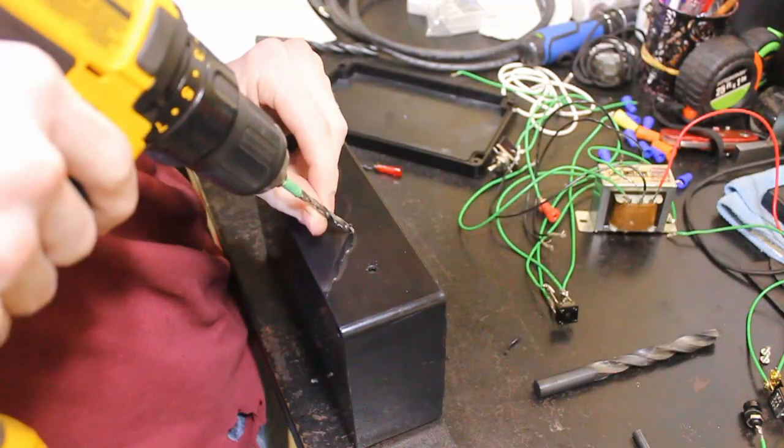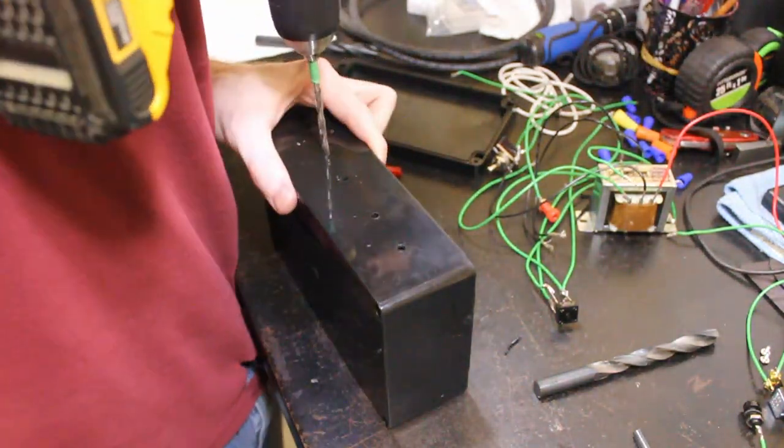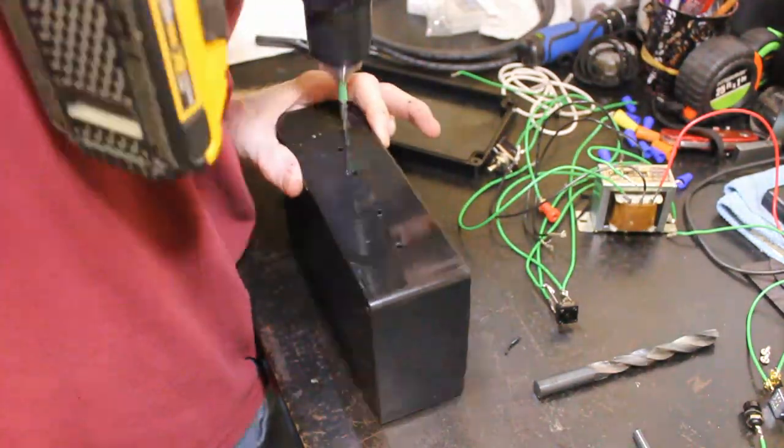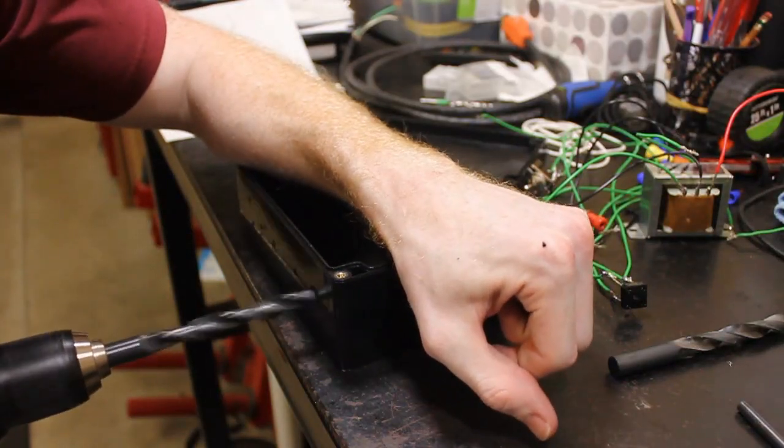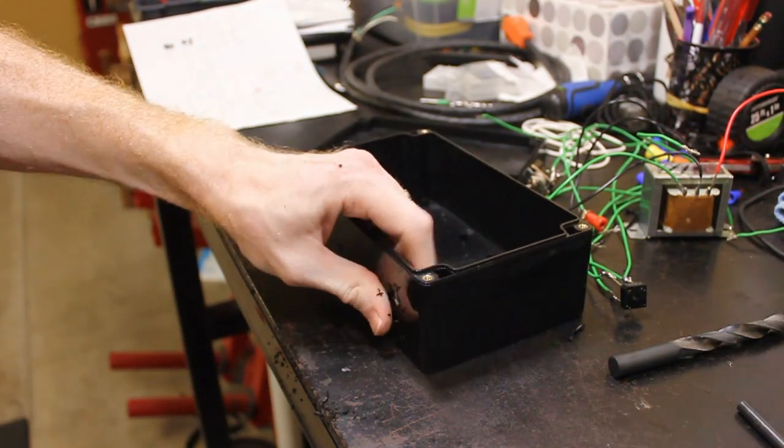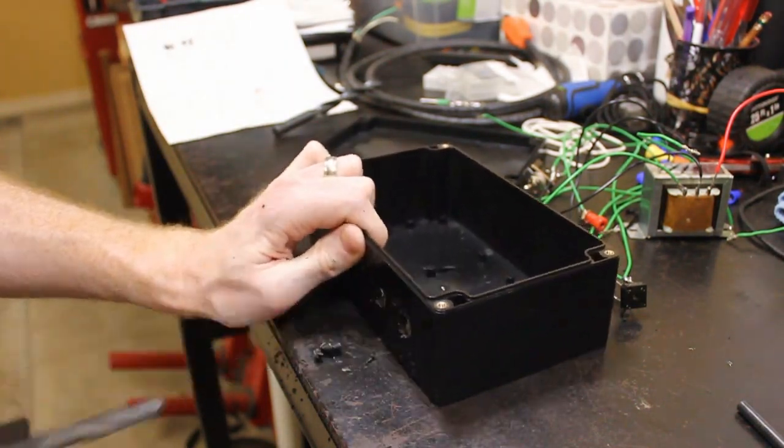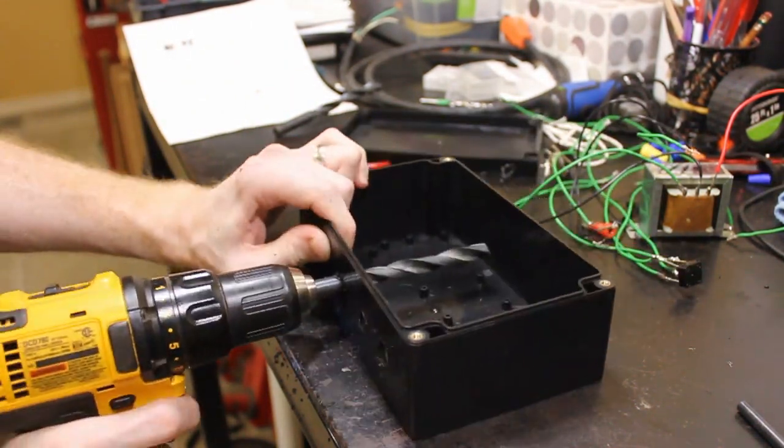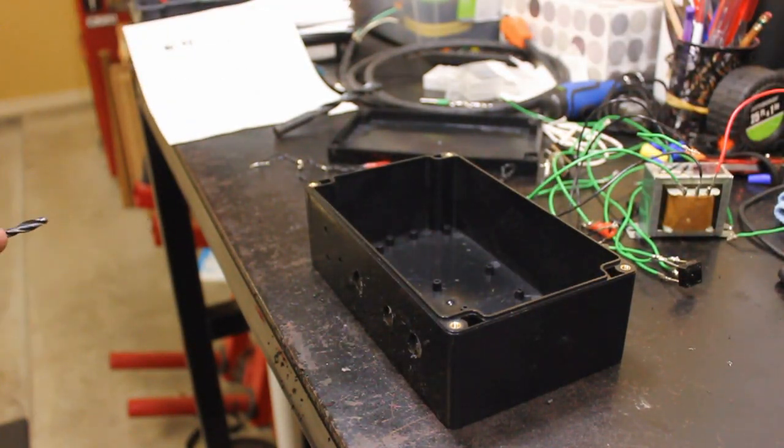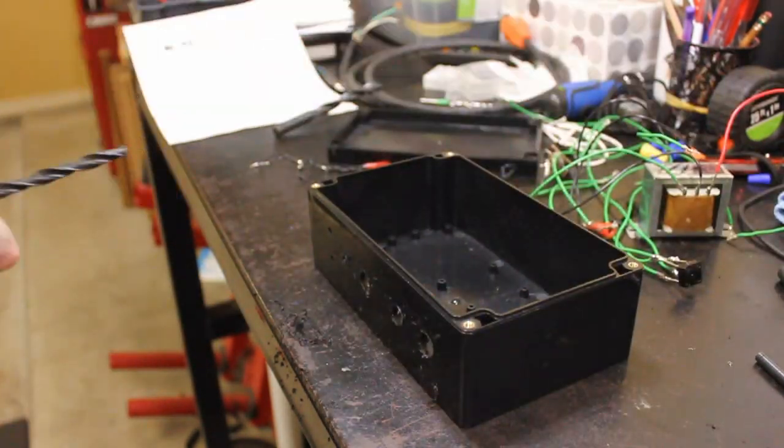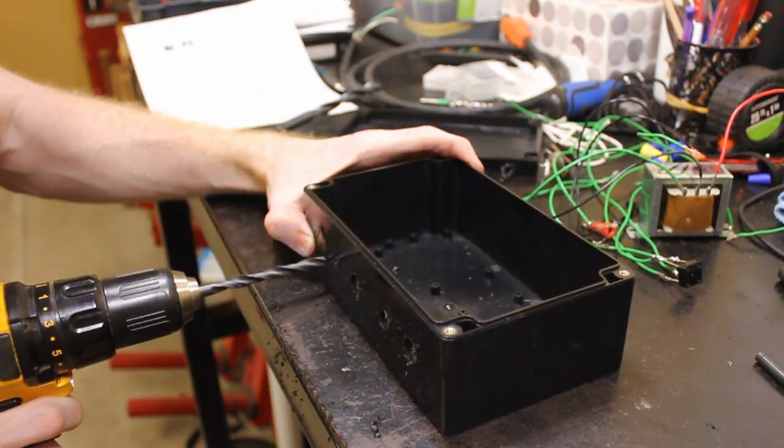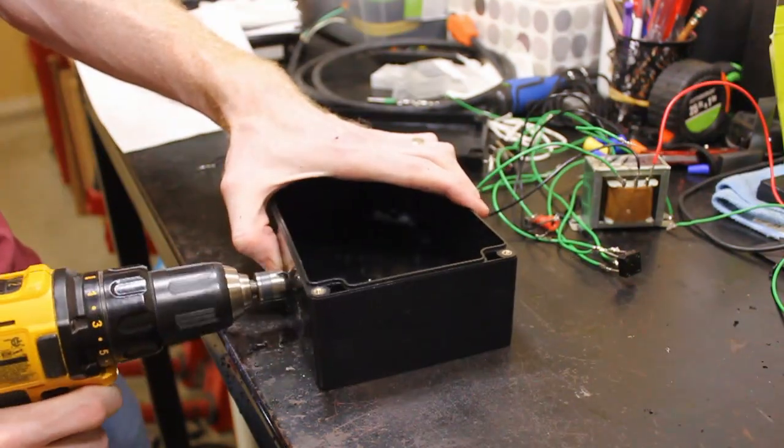I then drilled some pilot holes to get me started. Note that when you're drilling this plastic the large bits really want to grab and pull into it. So just be careful when you're drilling it. It's kind of a messy procedure but I got the job done. I ended up going back and cleaning up the inside and outside of these holes with sandpaper and then a little chisel to get the big pieces off.